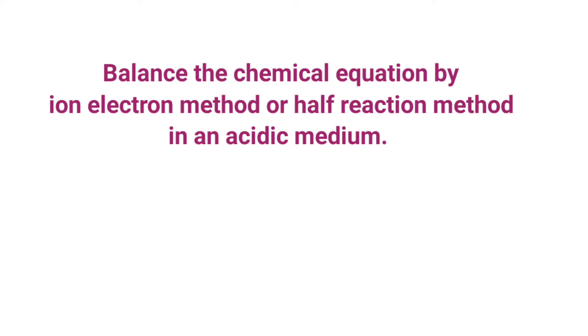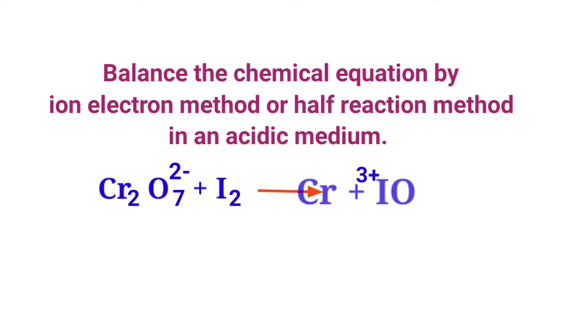Balance the chemical equation by ion electron method, or half reaction method, in an acidic medium. The reaction is: dichromate ion plus iodine gives chromium 3+ ion plus iodate.